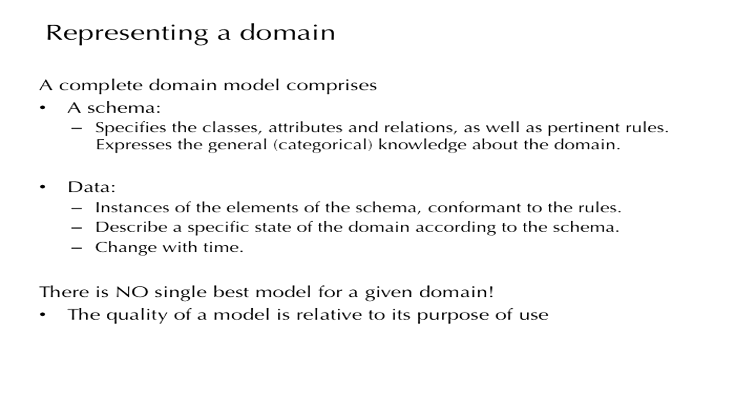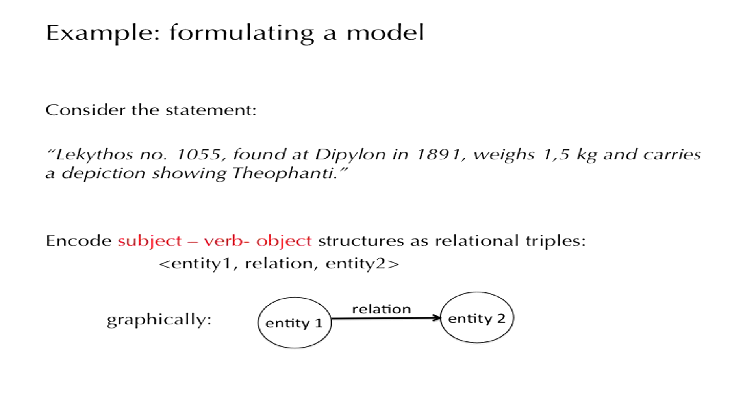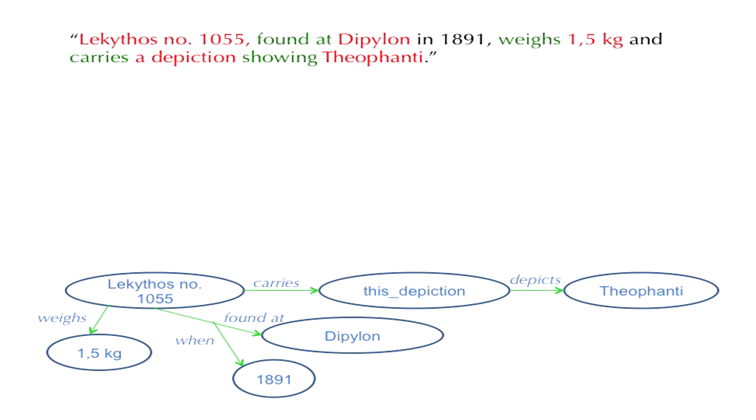Let us see how we might go about formulating a very simple model. And in fact, the steps that we will take now is exactly what you do every time we are building a model, be it very simple or very complex. We will start from a natural language statement and see how we can transform this into an encoded statement that takes the form of a model. So the statement goes as follows. A particular lekythos, lekythos number 1055, according to the register of the museum, found at Dipylon in 1891, weighs one and a half kilos and carries a depiction showing Theophanti. To turn this into a semantic model, we will encode subject-verb-object structures as relational triples of the form entity one, relation entity two or as shown graphically here, we use a circle or an oval or a box to denote entities and we use arrows to denote relations because relations are directed. There is a direction from entity one to entity two.